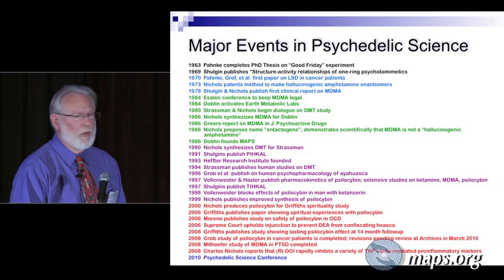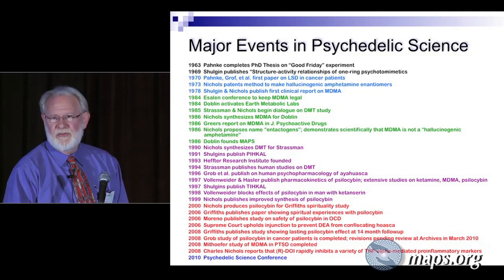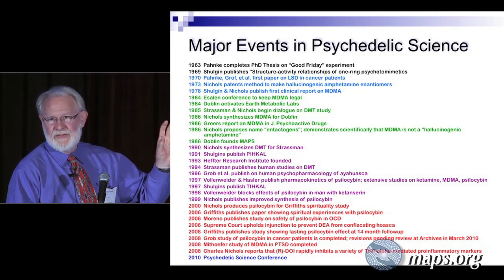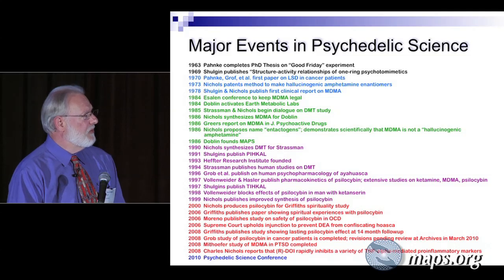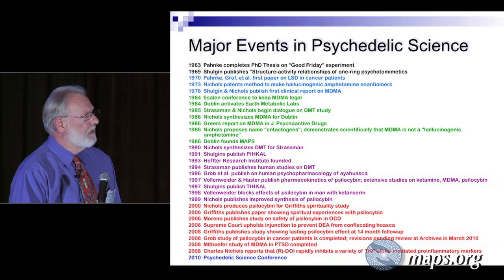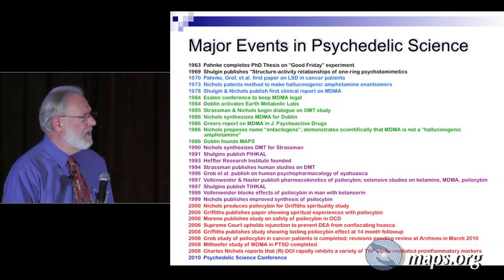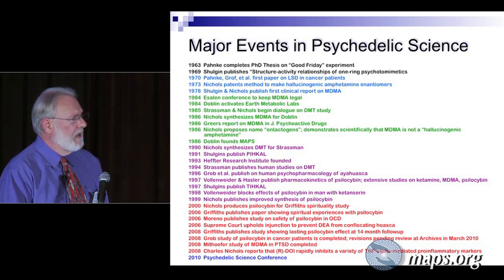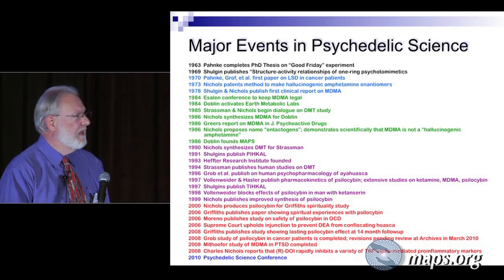I'm going to illustrate a few events important in the recent so-called Renaissance, grouped by decades. In the 60s, we had Walter Pankey completing his PhD thesis on the Good Friday experiment, and Sasha publishing with Tony Sargent and Claudio Naranjo, Structure Activity Relationships of One-Ring Psychotomimetics — what we called them back then, because they mimic psychosis. Then Pankey and Grove published their first paper. I was just graduating in 1973 and patented a method for making hallucinogenic amphetamine isomers so they became available for researchers. Then Sasha and I published the first report in a NIDA proceeding about MDMA.